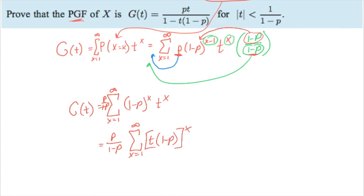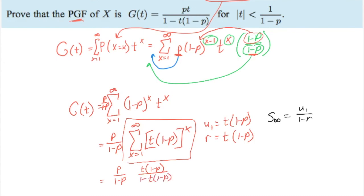Now, you'll notice that this is now going to be a geometric series where u1 equals t times 1 minus p because if I put in x equals 1, that makes my first term t times 1 minus p, then every single time r is also going to be t times 1 minus p. So using my formula, which I know that the infinite sum of a geometric sequence is u1 over 1 minus r, we'll go ahead and put all this in so that we now have that my G(t), my PGF, is equal to p over 1 minus p. But now this whole summation here is going to be equal to u1, which is t times 1 minus p all over 1 minus t times 1 minus p because that's my r there.